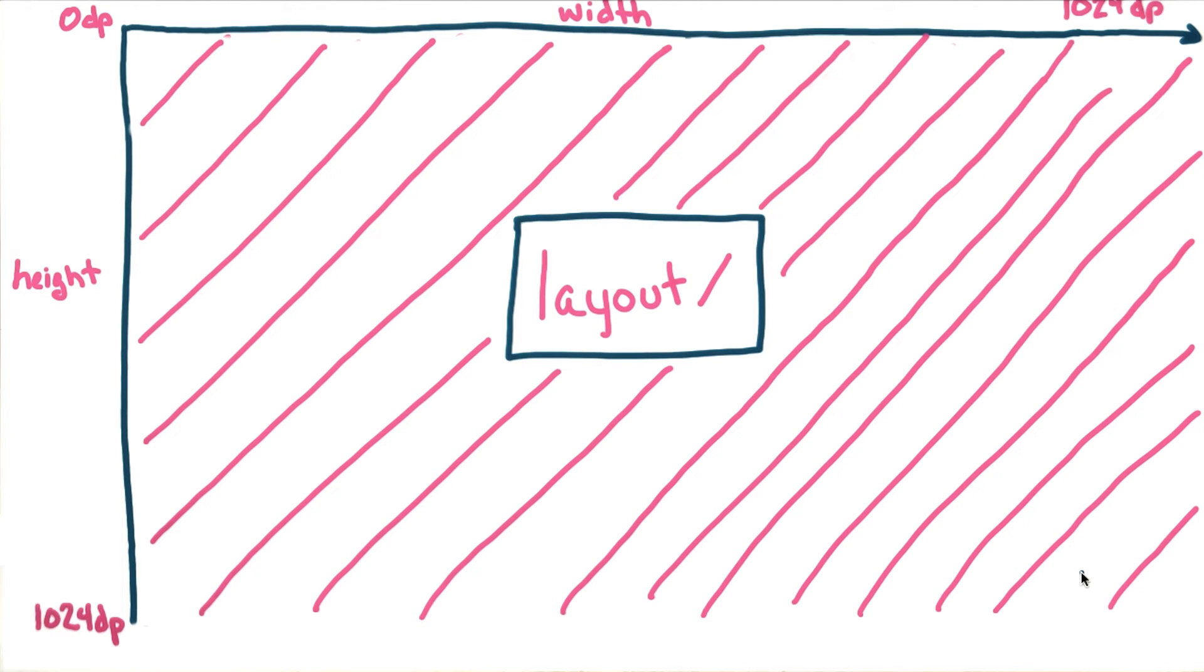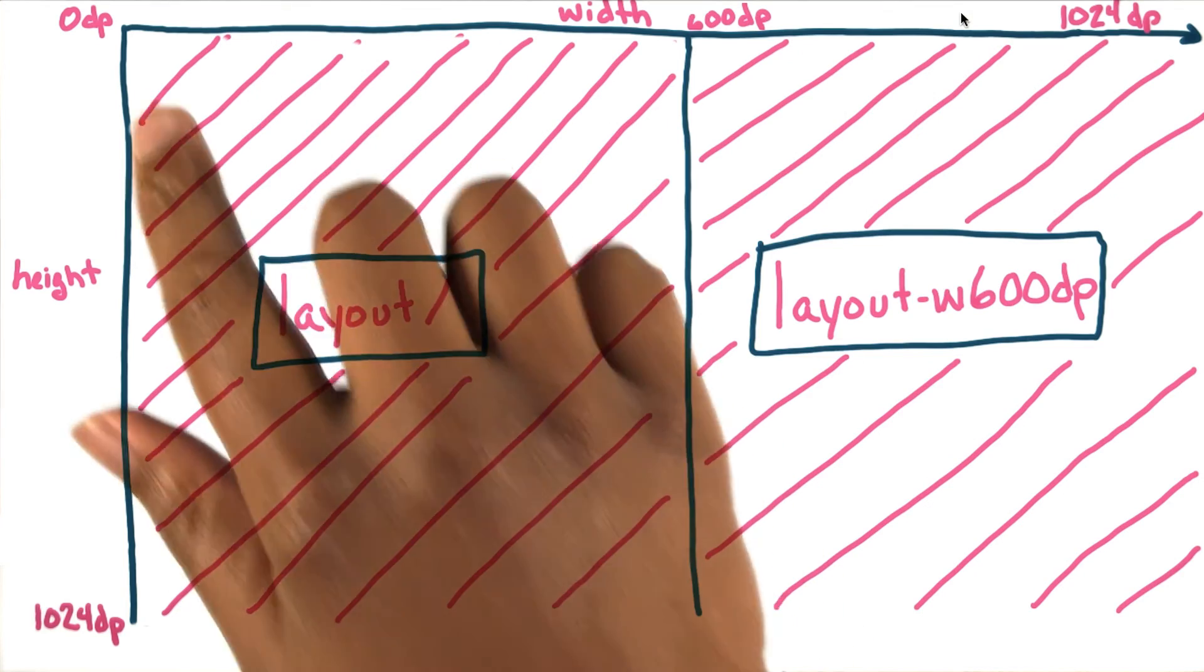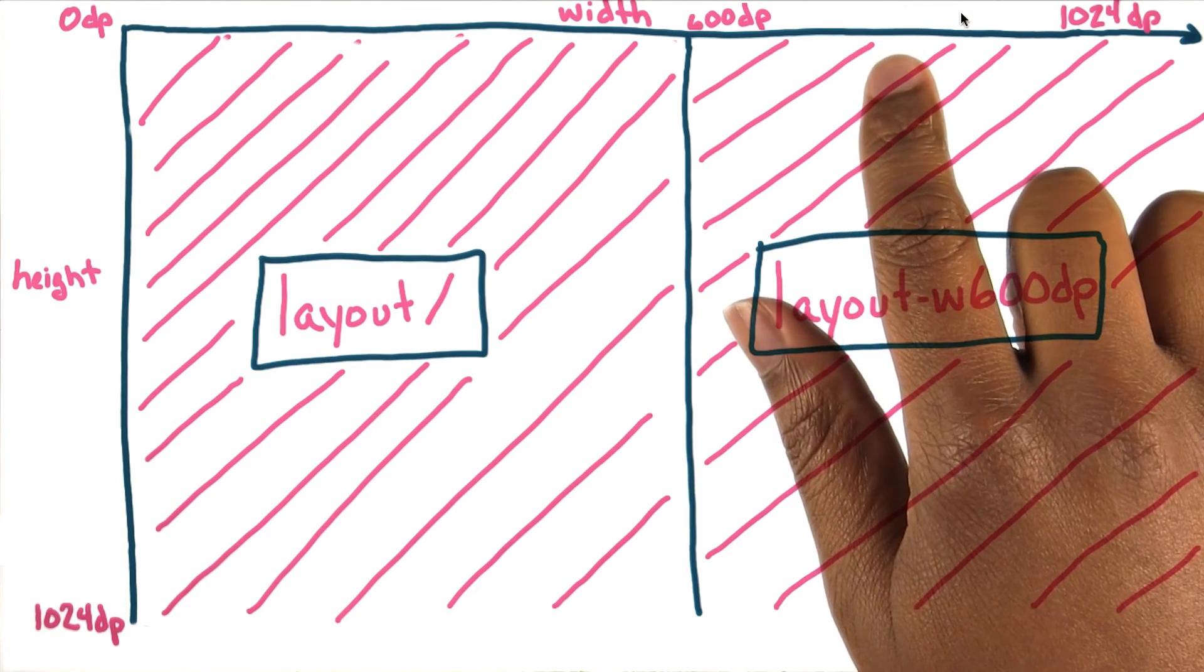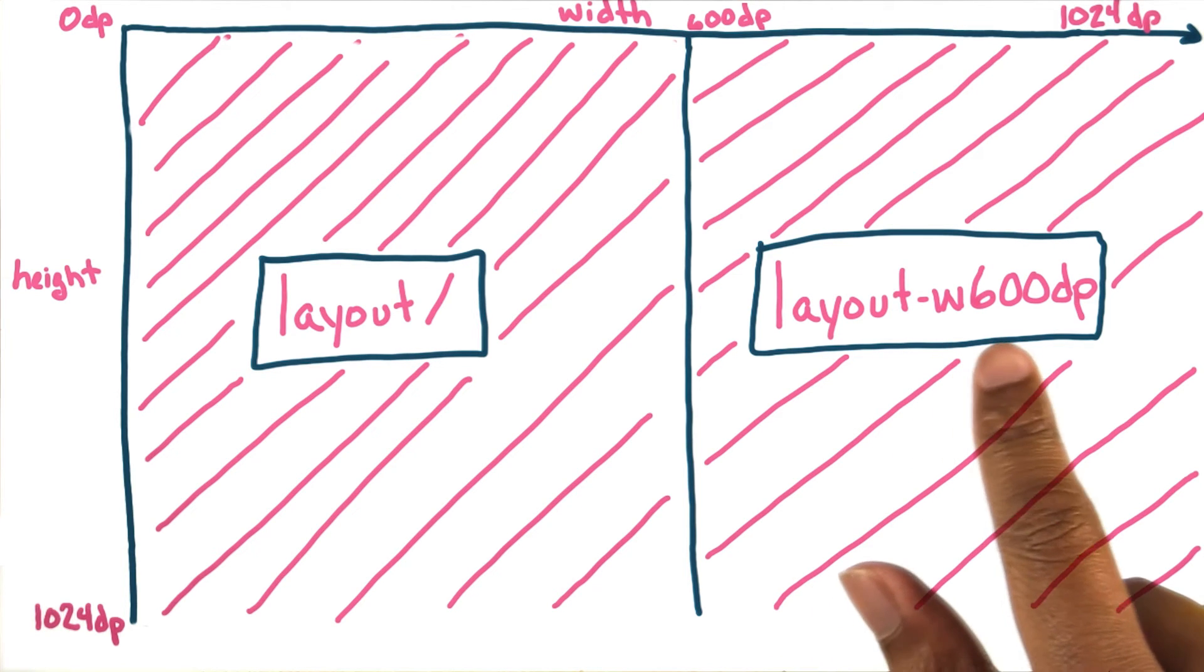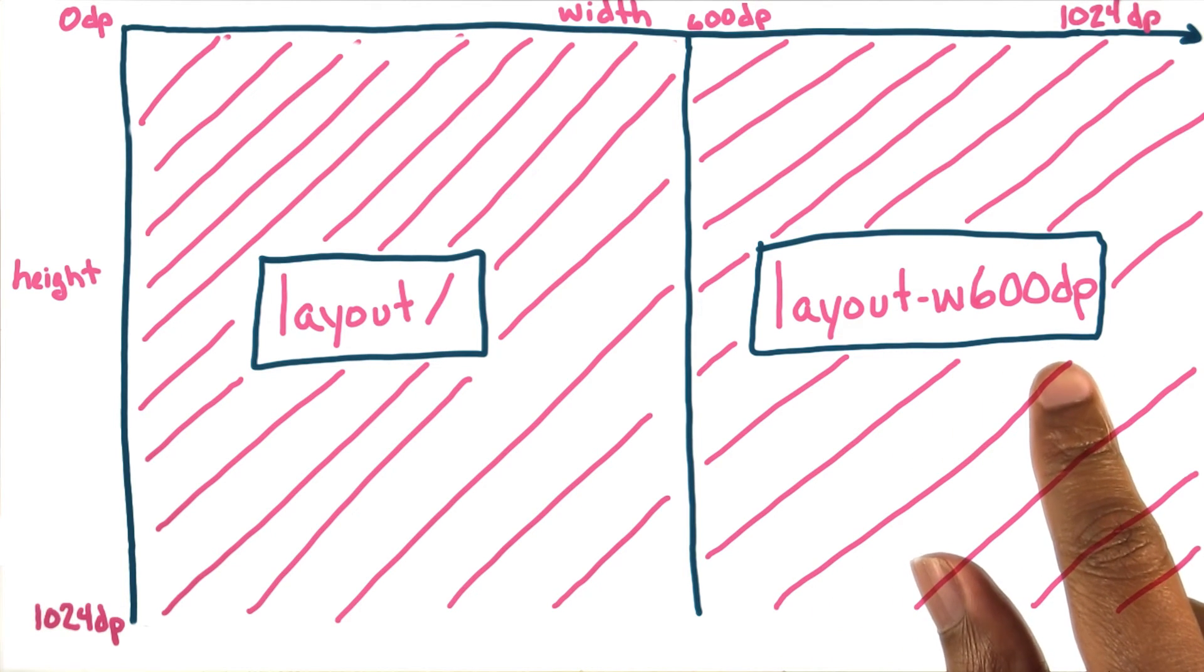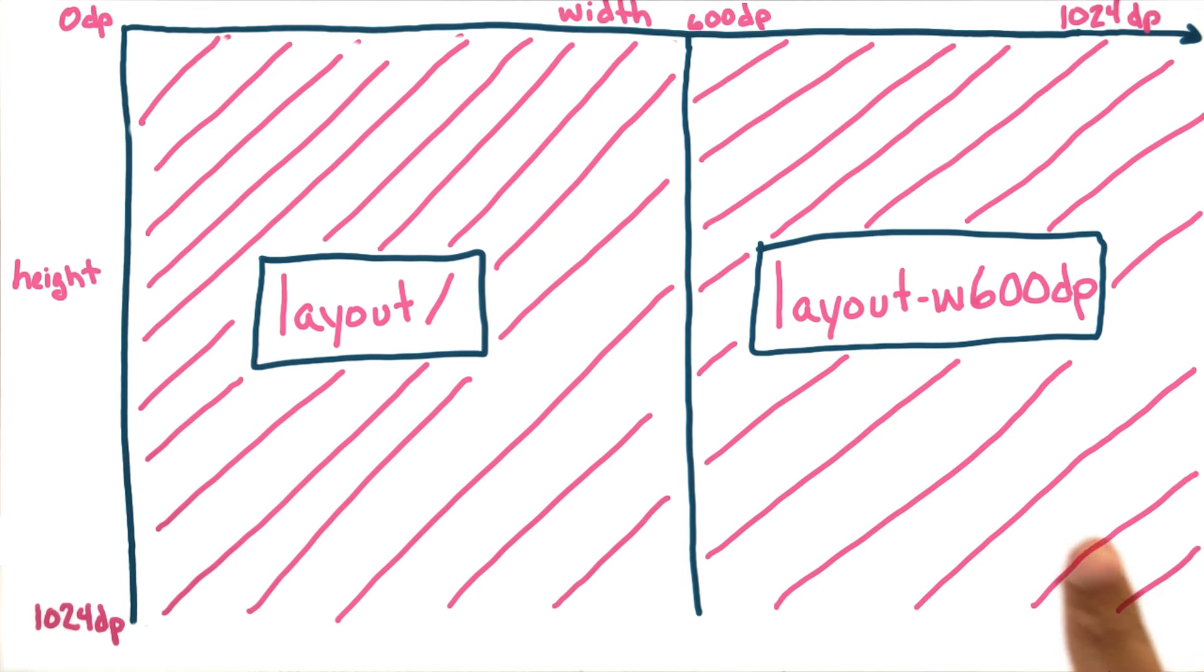So going back to breakpoints, say we chose a breakpoint of 600 dps. Once the screen is wider than 600 dps, we want to tweak our UI. For this, we add the w600dp directory qualifier to hold whatever new resources we create.